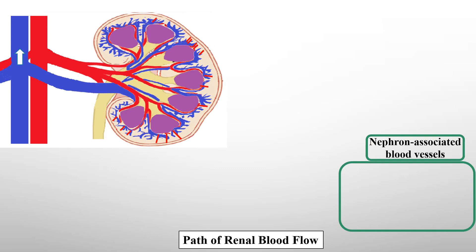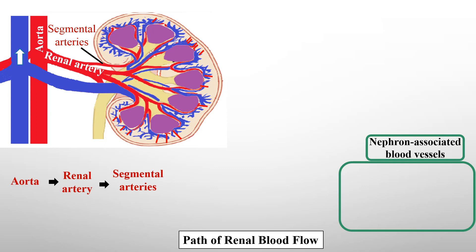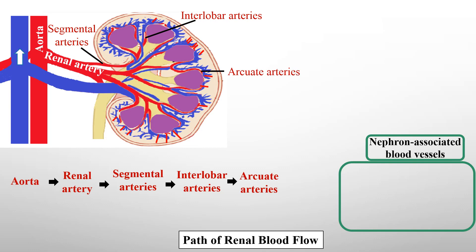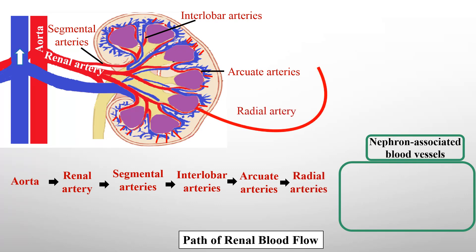Now we will study the complete pathway of renal blood flow. The aorta gives rise to the right and left renal arteries. Each renal artery enters the kidney and divides to form segmental arteries. The segmental arteries further branch to form the interlobar arteries, which run between the renal pyramids. The interlobar arteries subdivide to form the arcuate arteries that run parallel to the surface between cortex and medulla, which then give rise to the radial arteries.